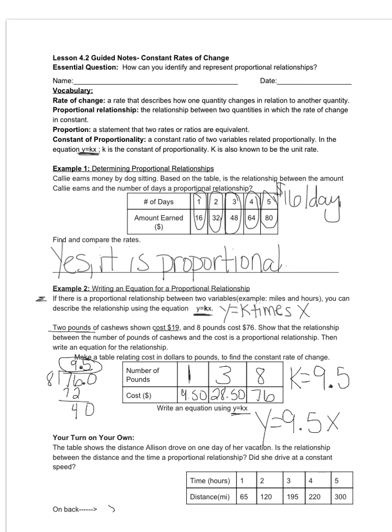And what that means is in this case, x represents the number of pounds. So for 10 pounds of cashews, I would simply take 9.5 times 10. And that would tell me the cost of those 10 pounds of cashews, which would be $95. What was I thinking?